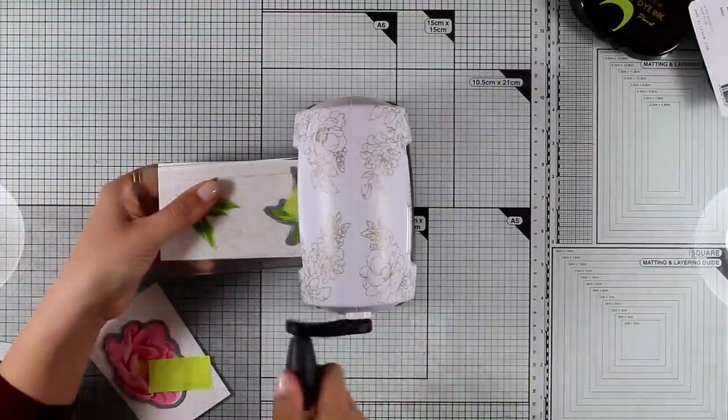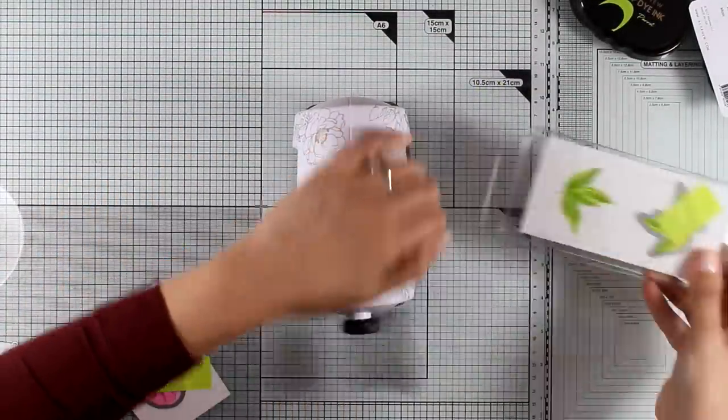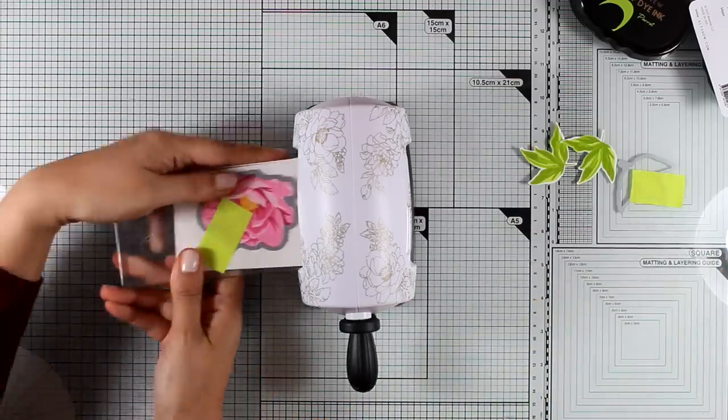Once I finished with all the stamping I used my mini blossom die cutting machine. As small as it is you can see that it fits nicely to cut out both the leaves as well as the flower.